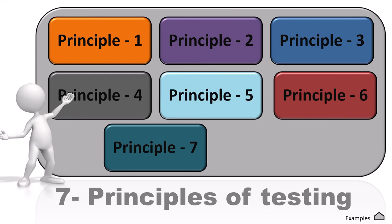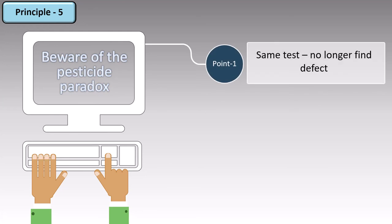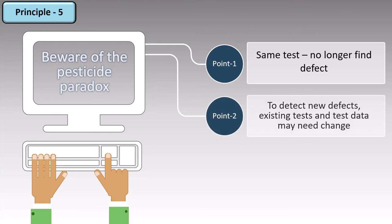Now we're on to the fifth principle of testing. Principle 5 states: beware of the pesticide paradox. Point 1 — the same test no longer finds defects. During testing, if you've already found a defect in a code, it is unlikely that you will find a defect again. Unless there is a big change in the code, you will find no more errors, since you already found one and corrected it. Point 2 — to detect new defects, existing tests and test data may need to change. You either have to update the test case or the data in it to be able to find new defects.